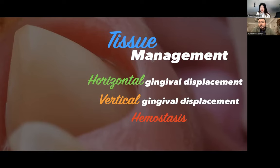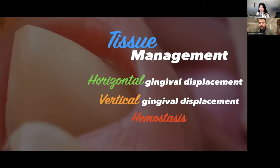Those are the three main factors that control ideal gingival retraction for digital scanning. There are a lot of differences we have to manage between conventional and digital impressions. The lecture was full of tips and tricks regarding horizontal and vertical displacement and how to achieve good hemostasis with different materials and different techniques.